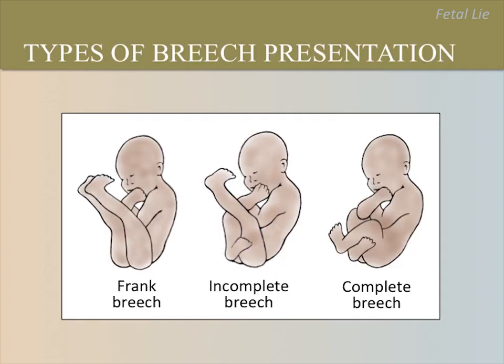There are three types of breech presentation. The frank breech is the most common, with hips flexed and knees extended — sometimes called the pike position — where the fetal buttocks are closest to the cervix. The next most common is the incomplete or footling breech, with one or both hips extended and a foot closest to the cervix. The complete breech is the least common, with hips and knees flexed, sometimes called the cannonball position. The incomplete breech imparts the highest risk during labor, followed by complete breech, then frank breech.